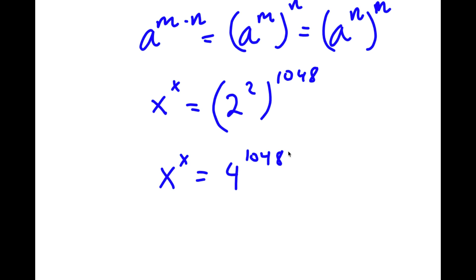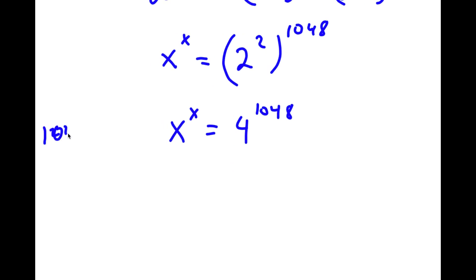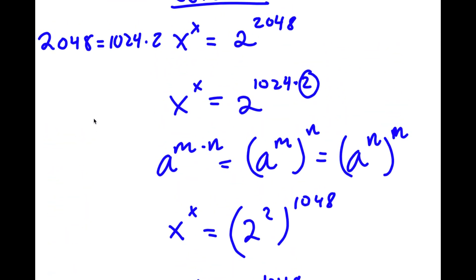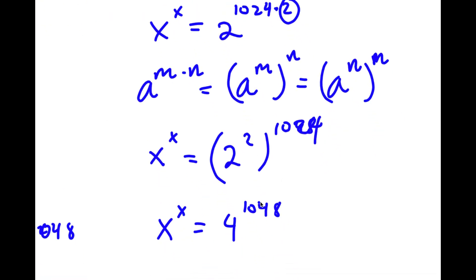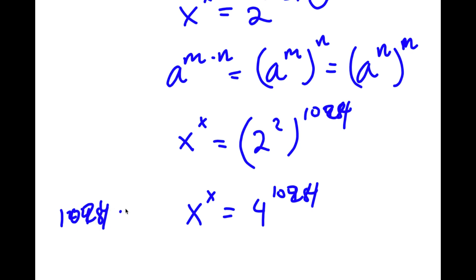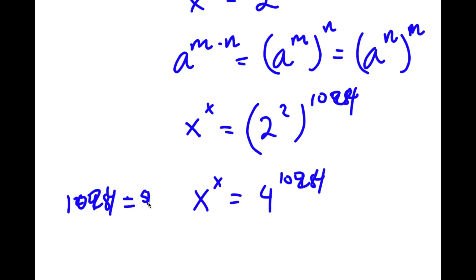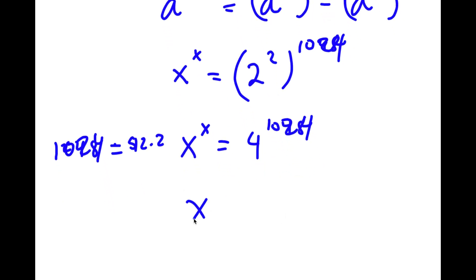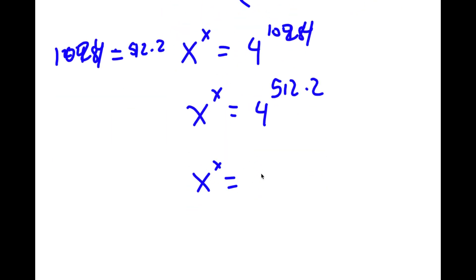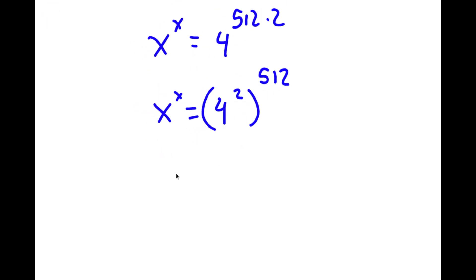Now I'm going to repeat the same process. 1024 is equal to 512 times 2, so now I have x to the power of x is equal to 4 to the power of 512 times 2. I'm going to rewrite that as 4 to the power of 2, to the power of 512. Now 4 to the power of 2 is 16, so I have x to the power of x is equal to 16 to the power of 512.